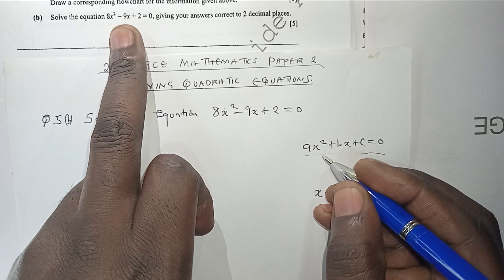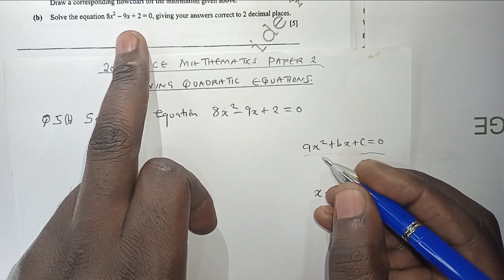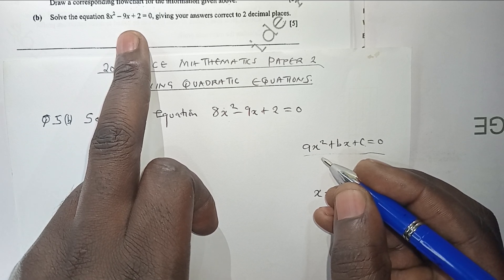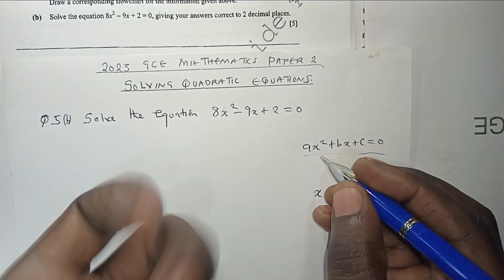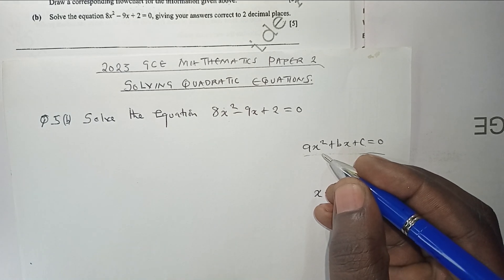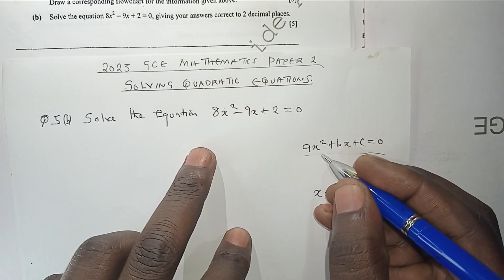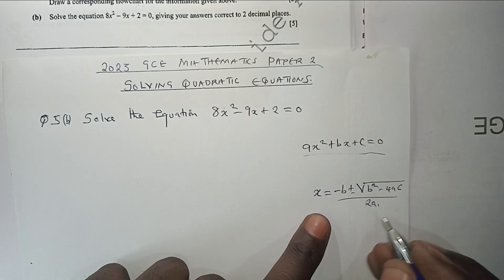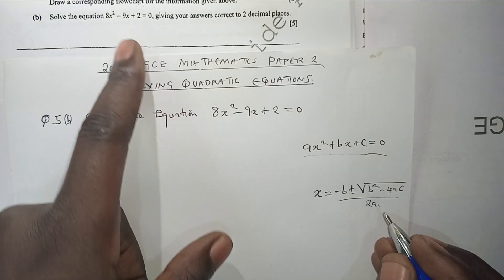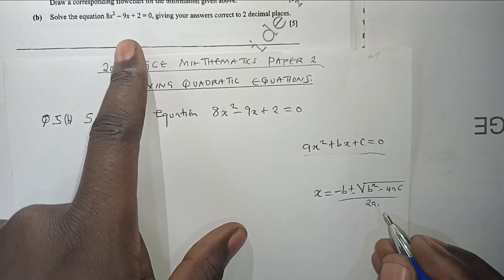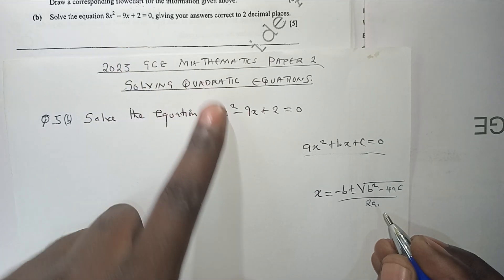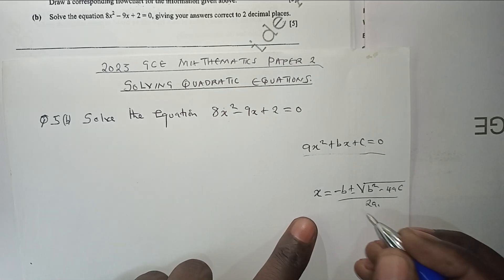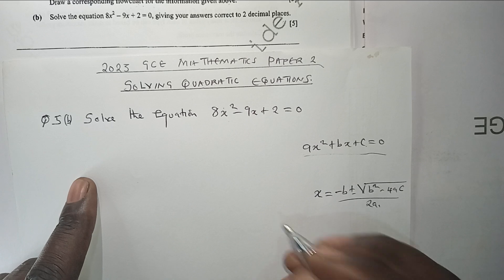And you can solve a quadratic equation using different methods, such as completing the square method, the formula method, the graphical method, among others. And in our case, we are going to use the quadratic formula to work out this question which is coming from the 2023 GCE Mathematics Paper 2, the ECZ question.